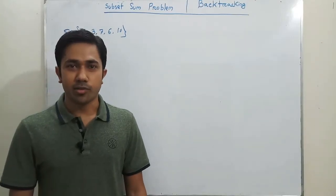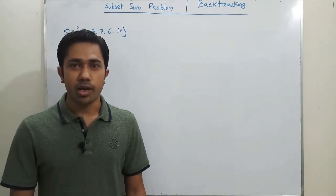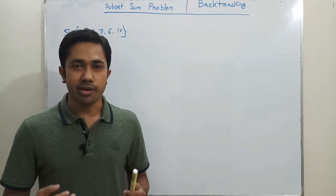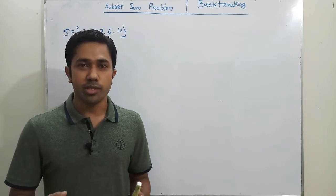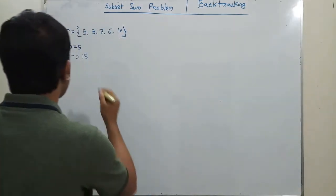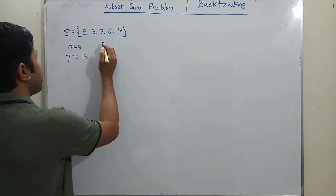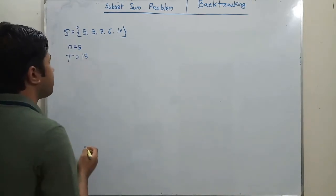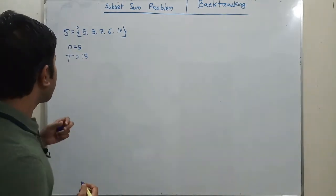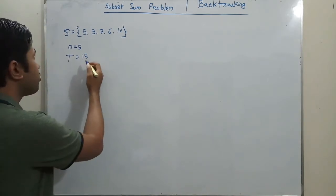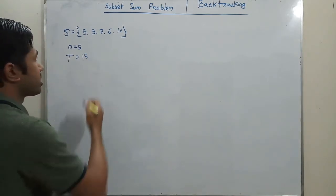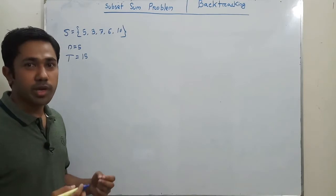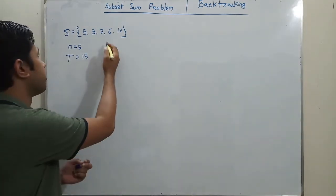Hi, I am Salauddin. Today I am here to discuss the subset sum problem. It is a backtracking problem. First let's see what is the problem. Here we have a set of five elements, and we want to make 15 using those elements. The problem is: in how many ways can we make 15 using those elements?